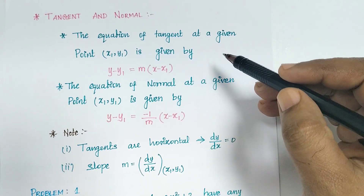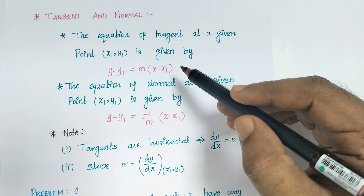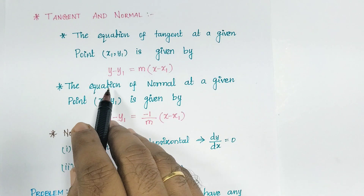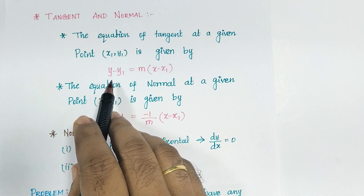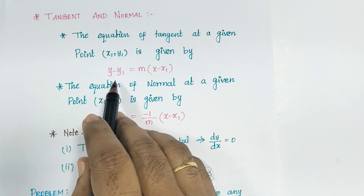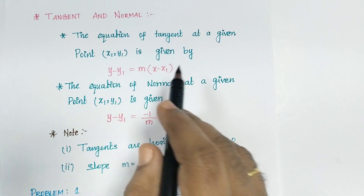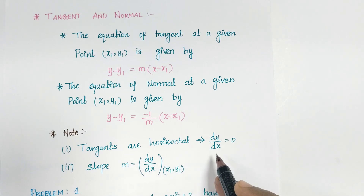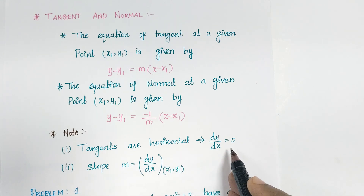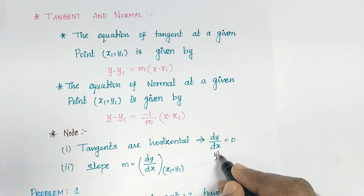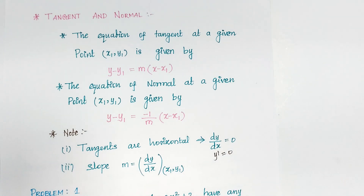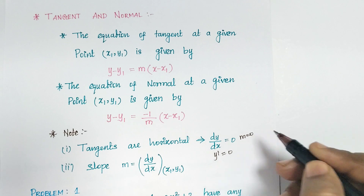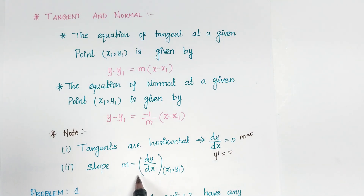The equation of tangent at a given point x1, y1 is given by y minus y1 is equal to m into x minus x1. Here m represents slope. For a horizontal tangent, dy/dx equal to 0, that means y dash equal to 0 when m equal to 0. The slope m is equal to dy/dx at a point x1, y1.